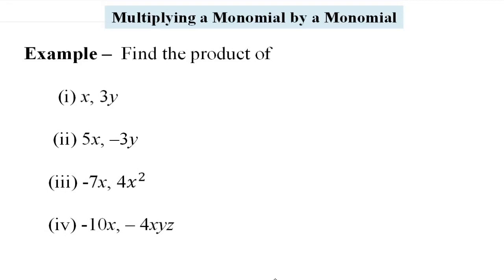Find the product of x and 3y. तो x और 3y का हमें product find करना है। इसको product के form में लिखेंगे: x multiply by 3y. x का coefficient है 1, so 1 multiply by 3 = 3. फिर variable का multiplication: x multiply by y = xy. तो answer हो गया 3xy.